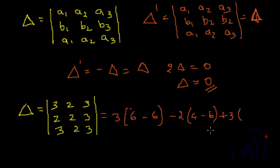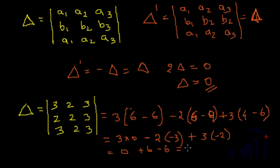3 into 4 minus 6. That is equal to 3 into 0 minus 3 times 3 plus 3 times minus 2, which is equal to 0 plus 6 minus 6, which is equal to 0.